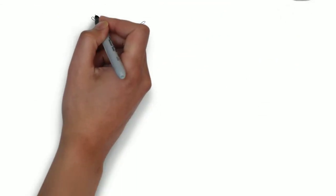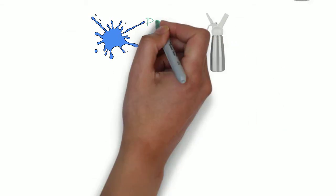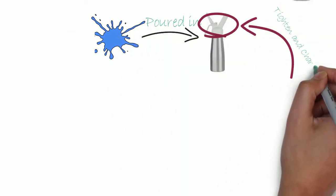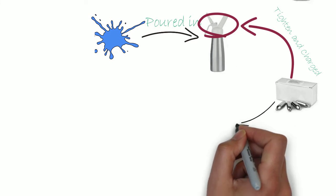Cream whippers work by forcing nitrous oxide into the liquid to be whipped. First, the intended liquid is poured into the cream whipper, then the lid is tightened. The vessel is then charged with N2O cartridges.